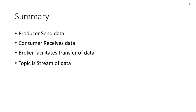Let us summarize. Producer is the application which sends data. Consumer is the application which wants to receive data. Broker is a service which facilitates the transfer of data from producer to consumer — it acts as a middleman. Topic is a logical name given to one stream of data. I'll meet you in the next video to talk about partitions and offsets. Bye.